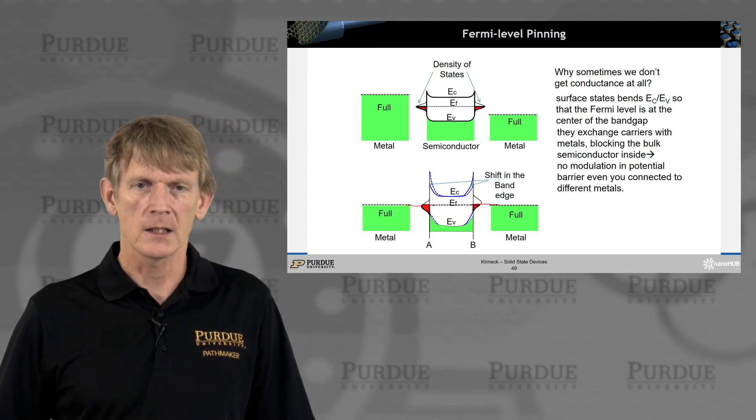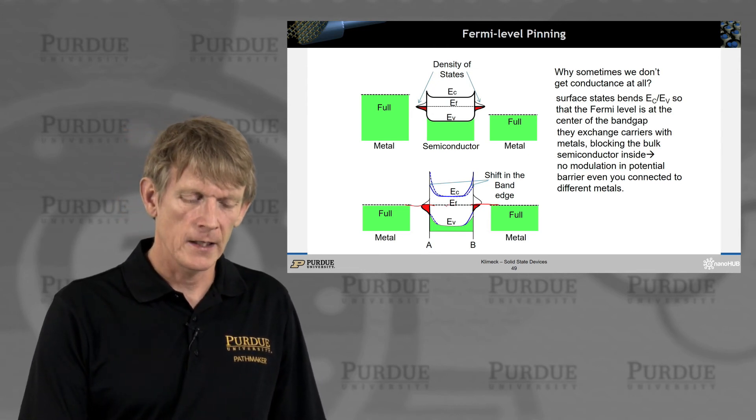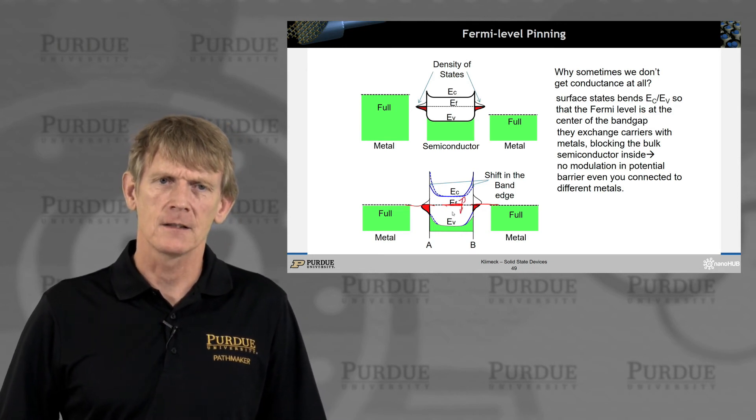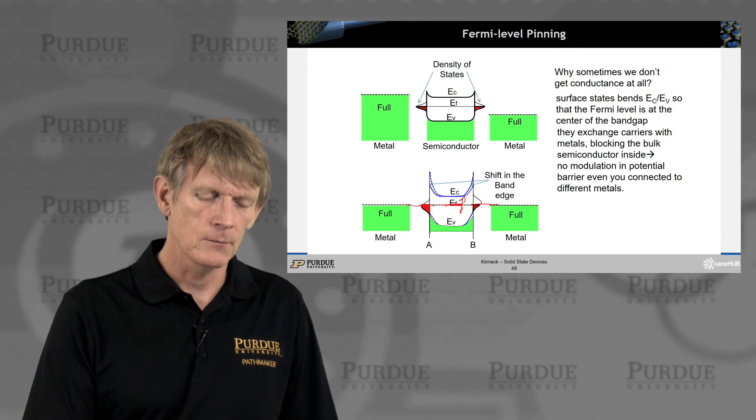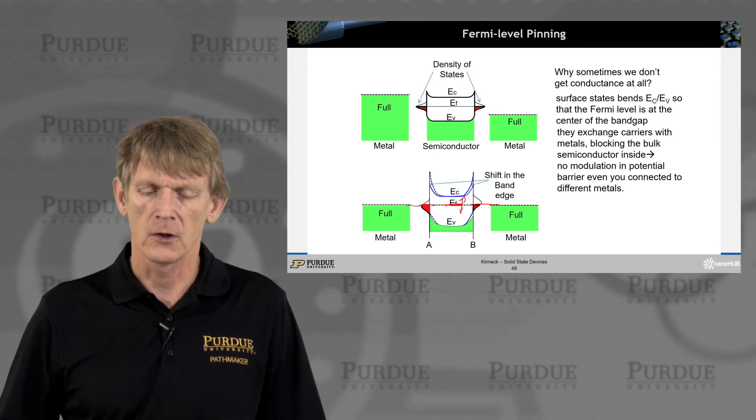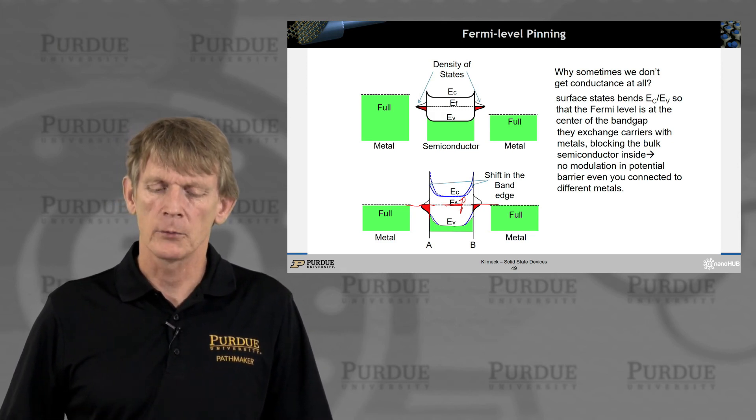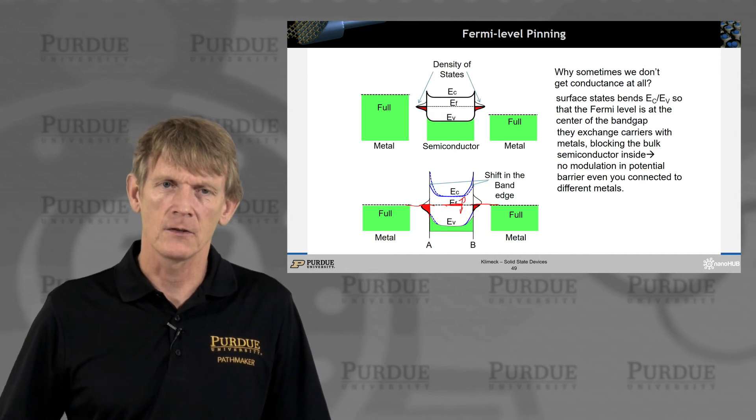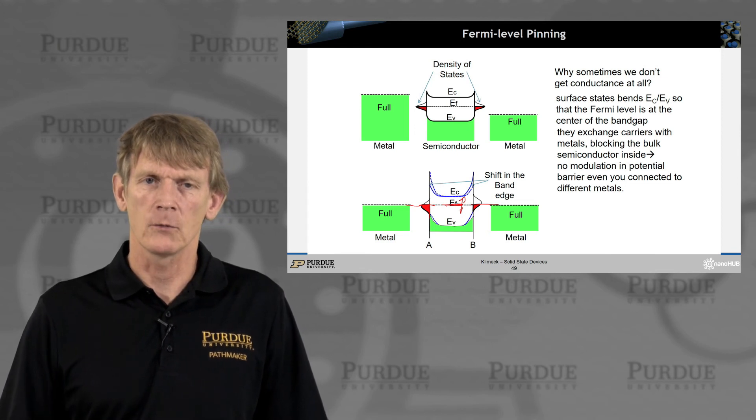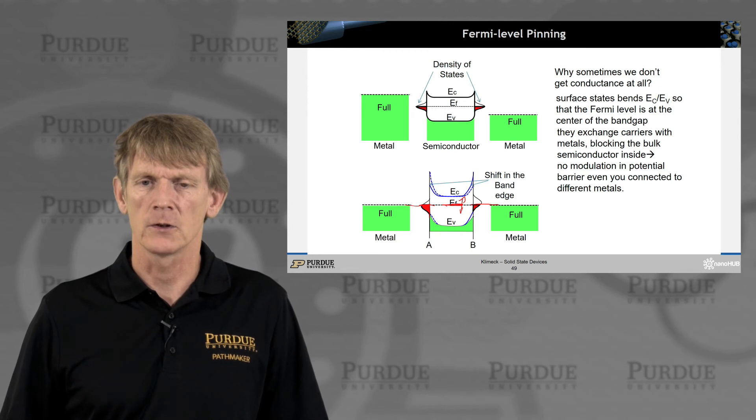And what you would like to do is modulate the semiconductor potential. You want to drag this Fermi-level up and down, but nothing changes at the surface. You just keep filling the same states, and you're not really modulating or changing the flow in the semiconductor. So, no modulation of the potential barrier means that you're not modulating your device, and if the potential is pegged, therefore it doesn't matter what voltage applies, and therefore it doesn't change the current voltage characteristic.